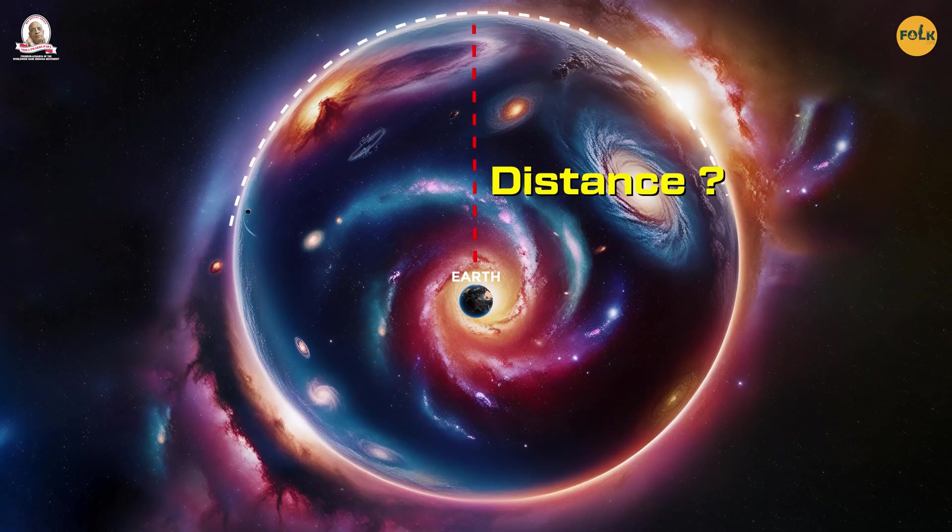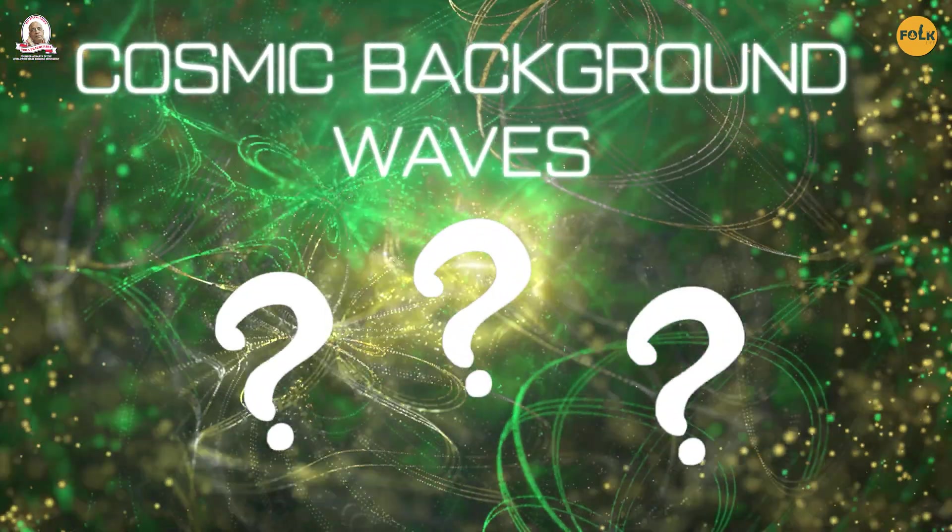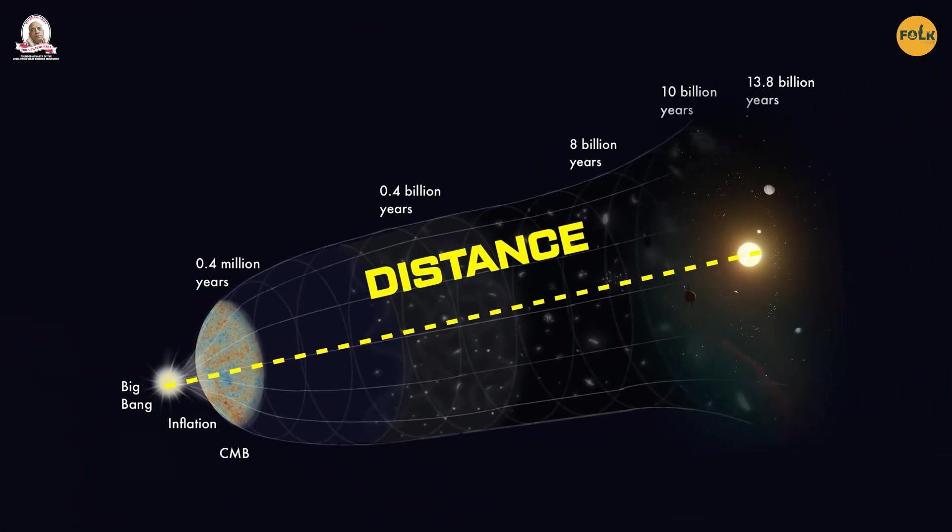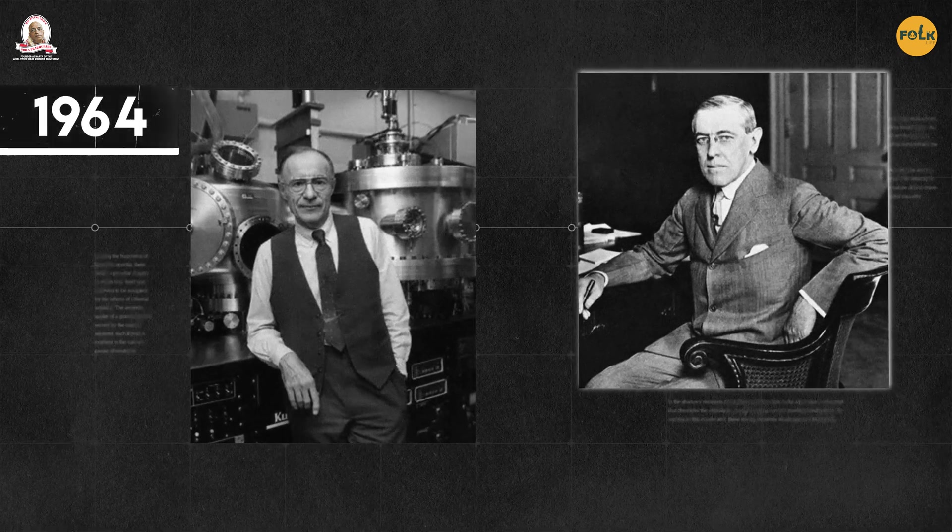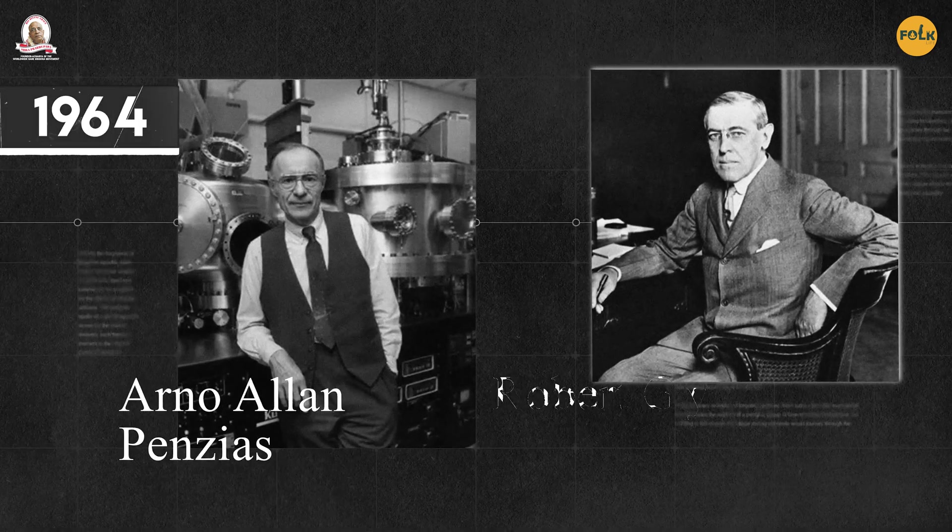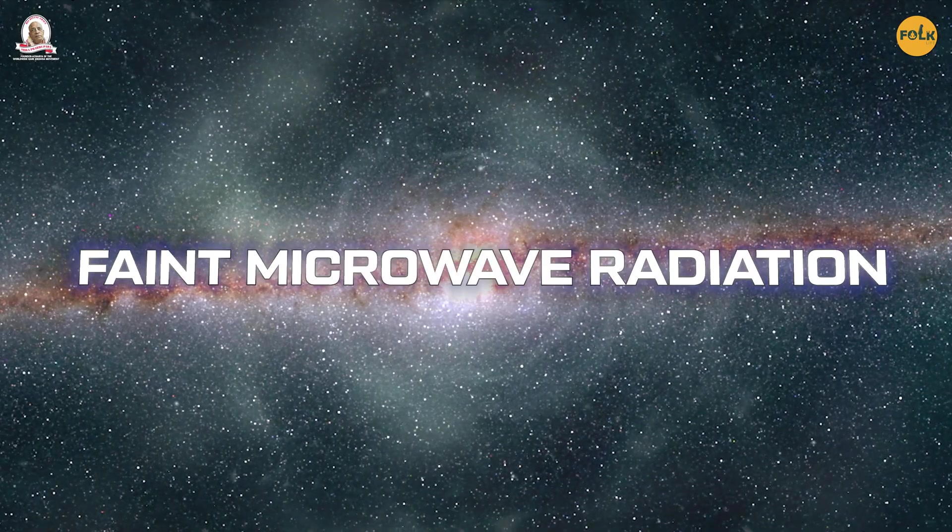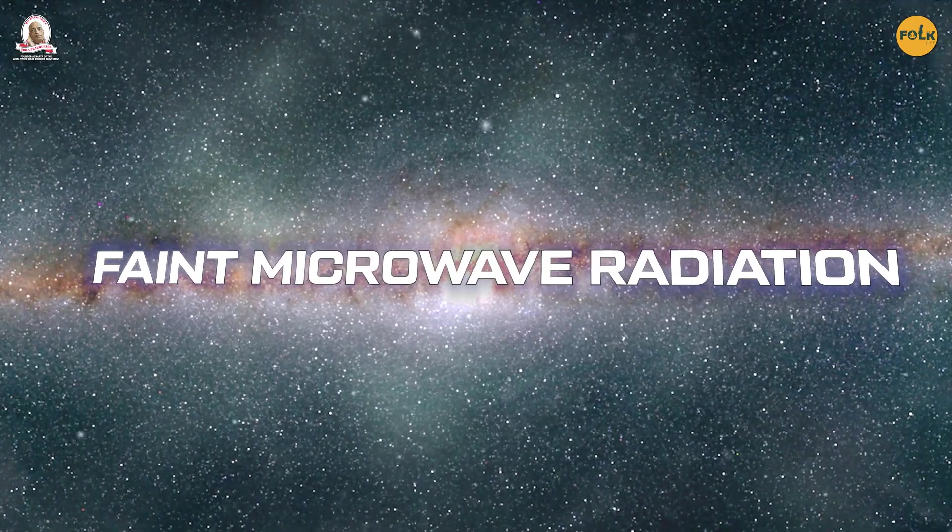But what are these cosmic background waves, and how is distance measured from them? In 1964, two American scientists, Arno Alan Penzias and Robert Woodrow Wilson, discovered faint microwave radiation spread throughout the entire universe.